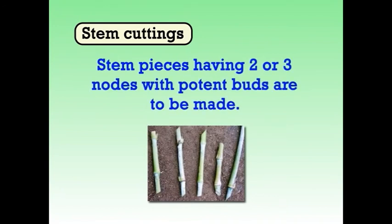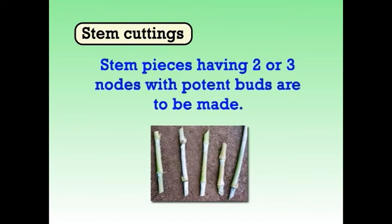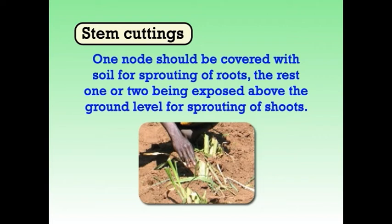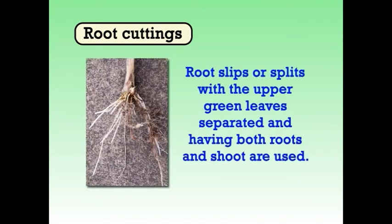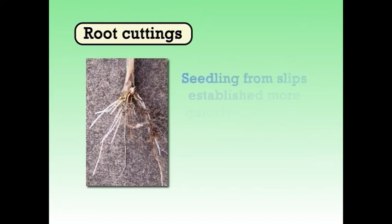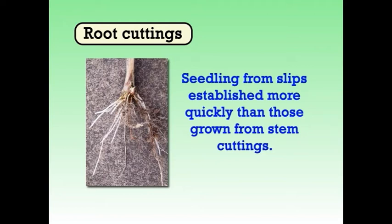The grass does not produce viable seeds. Hence, it is propagated by vegetative means. For stem cuttings, stem pieces having two or three nodes with potent buds are to be made. One node should be covered with soil for sprouting of roots, with one or two nodes exposed above the ground level for sprouting of shoots. For root cuttings, root slips or splits with the upper green leaves separated and having both roots and shoots are used. Seedlings from the slips establish more quickly than those grown from stem cuttings.